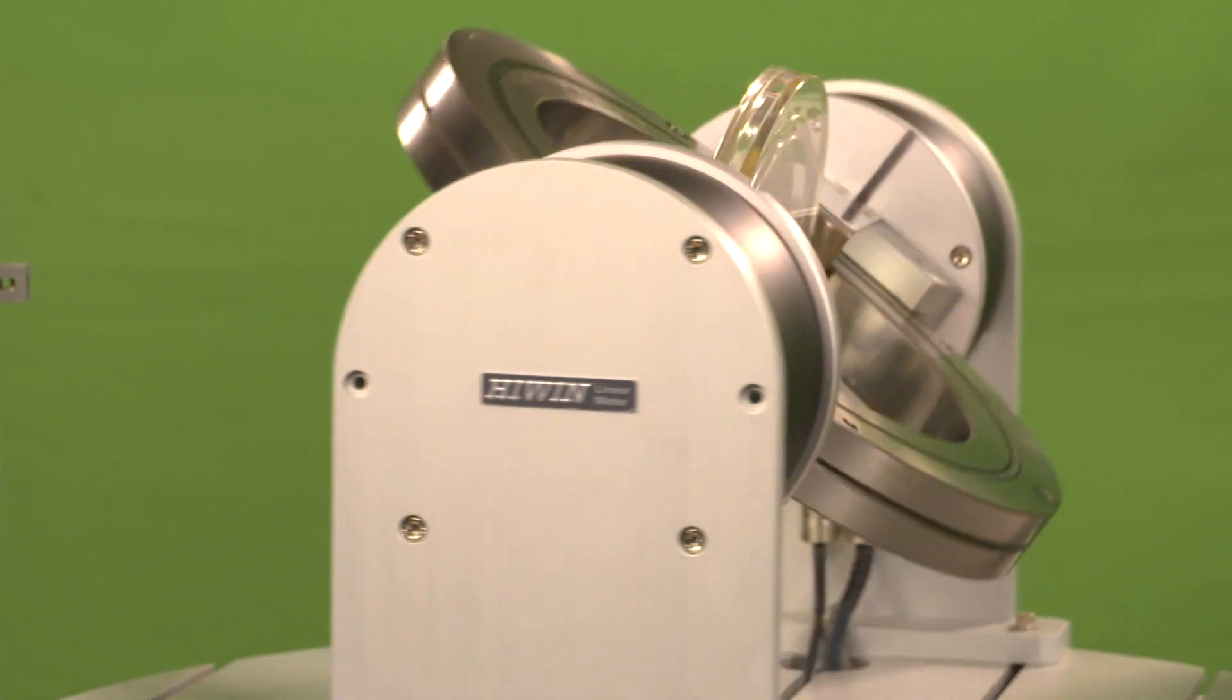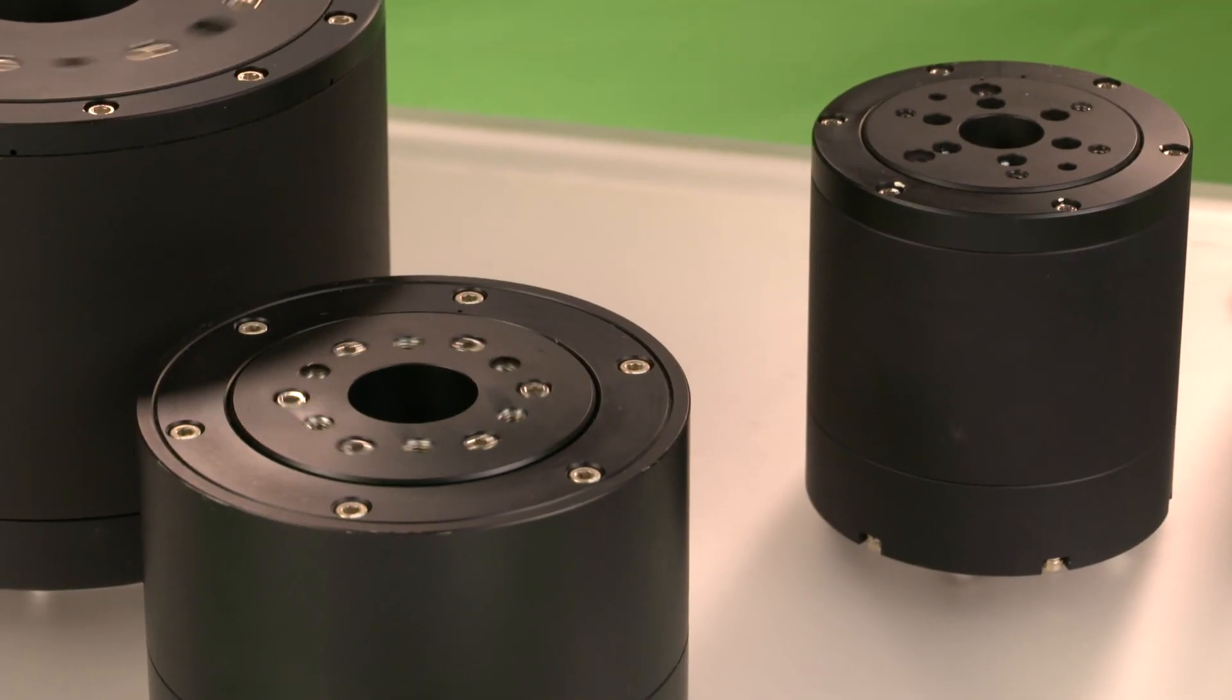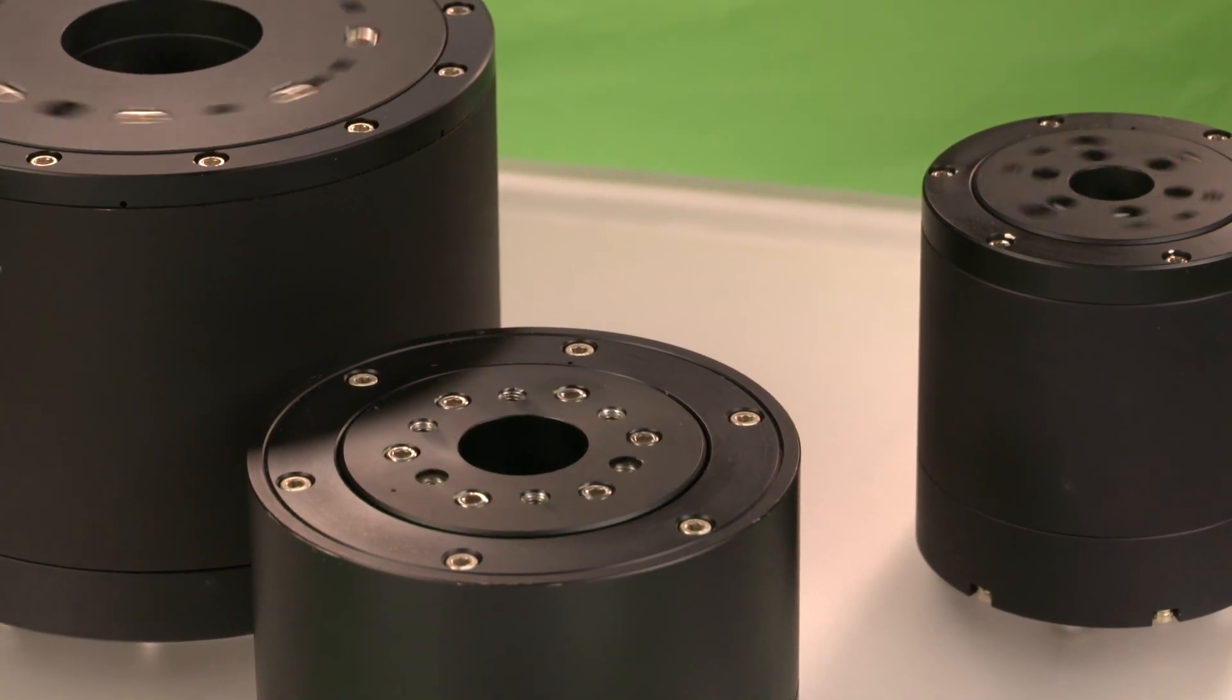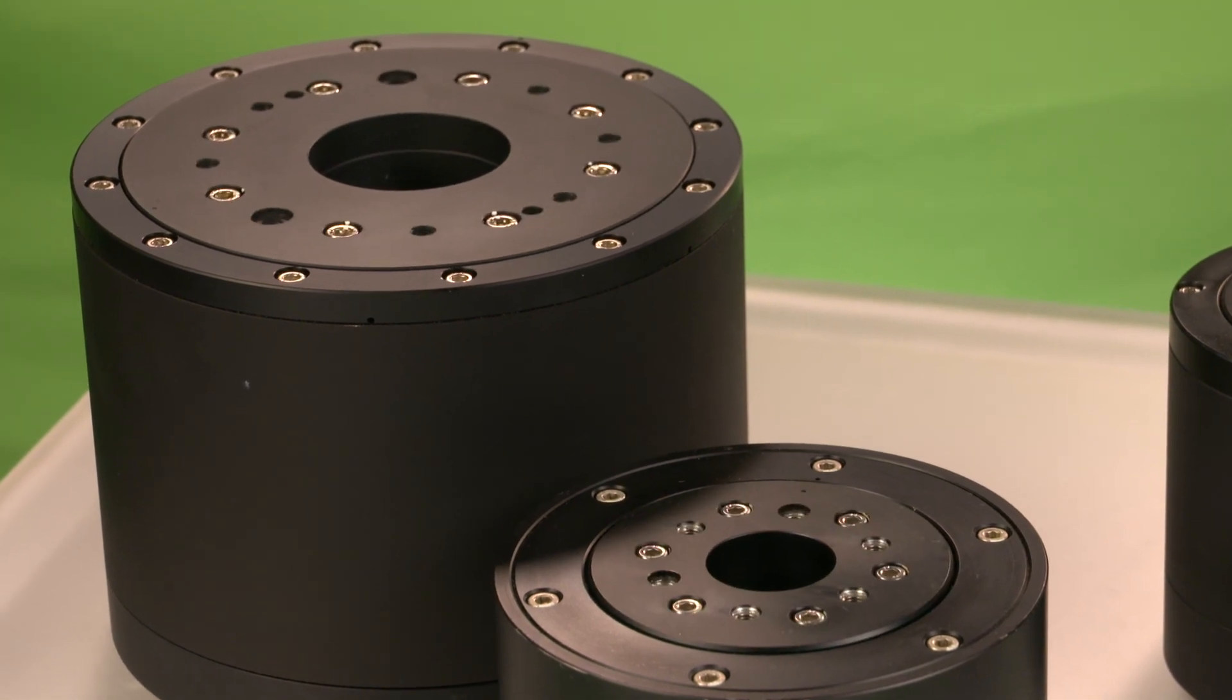Hiwin's direct drive motors are also highly accurate due to the high resolution encoder, up to 4.3 million counts per revolution. Repeatability is as low as plus or minus 2.5 arc second.